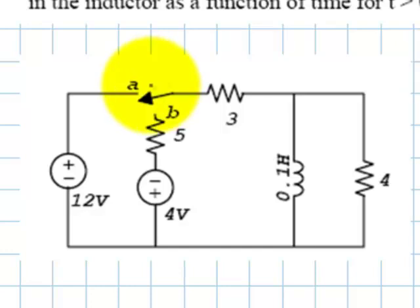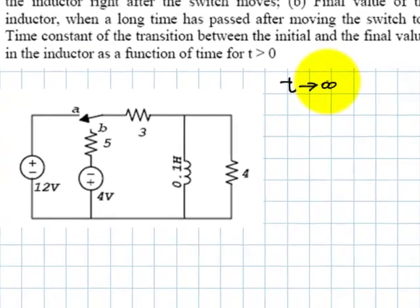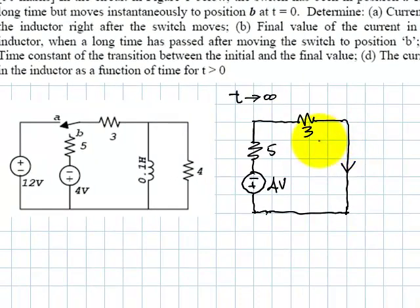We move the switch from A to B, in fact removing this 12 volt source off the circuit, and then we wait for a very long time to draw the circuit at T infinity. This is the situation. The source is not there anymore, the switch is on B, and the inductor is again in DC steady state because we waited a very long time. It's a wire again. The current in this 4 ohm resistor, again, is zero amps, for the same reason we saw before it's been bypassed by the wire-like inductor.